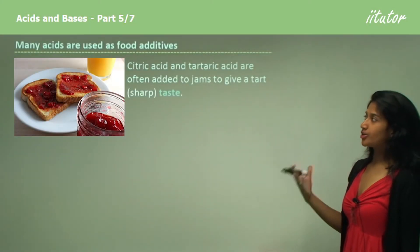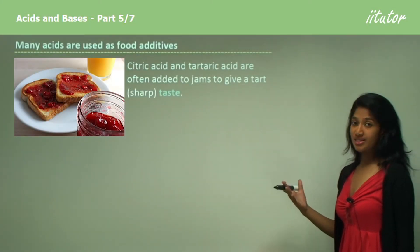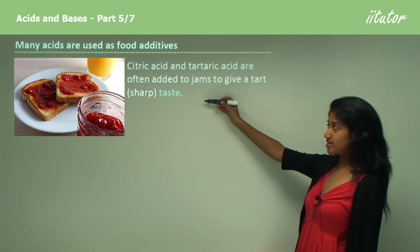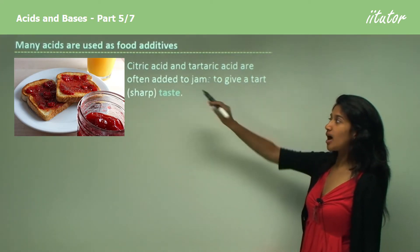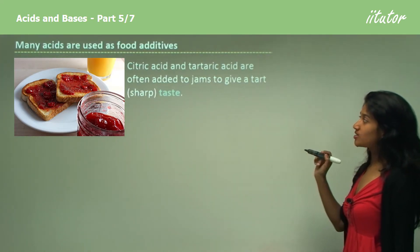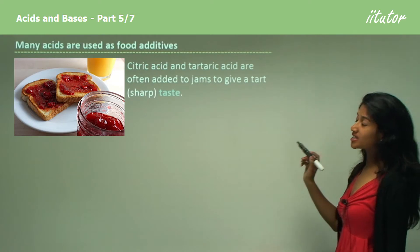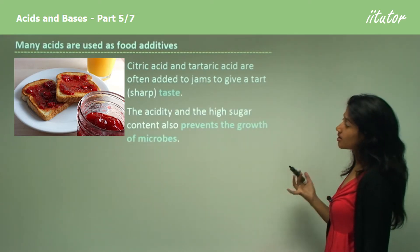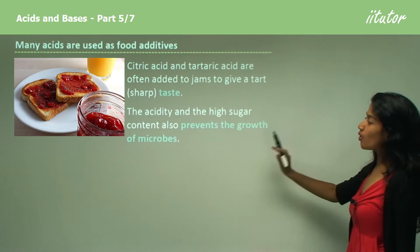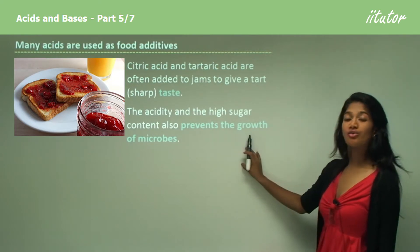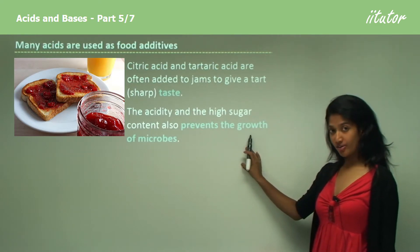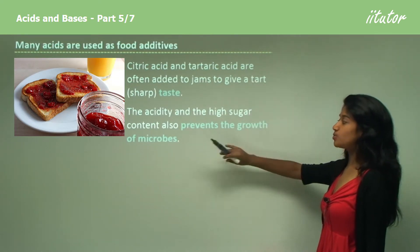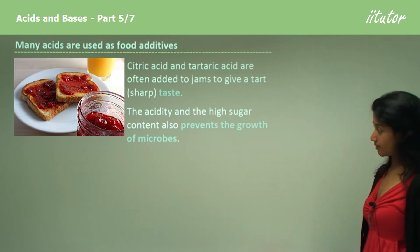Many acids are used as food additives, meaning they can enhance the taste. For example, citric acid or tartaric acid can be used to enhance taste and give it a sharper flavour. The acidity would also prevent the growth of microbes, so while enhancing the taste it would also be used as a preservative.